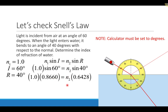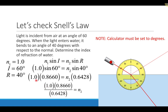To solve for the index of refraction of region 2, I divide both sides by 0.6428. So 0.8660 divided by 0.6428 gives 1.35. The known index of refraction of water is about 1.33, so this is very close to what we'd expect.